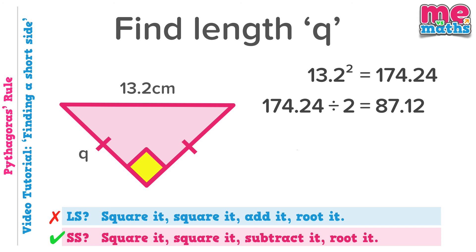And that must be one of those shorter sides squared. So if each of our short sides squared is 87.12, if I want to know what just the side length is, I'm going to need to square root that value. That actually gives us 9.3 centimetres. So Q, and actually the other short side as well, are both 9.3 centimetres long.